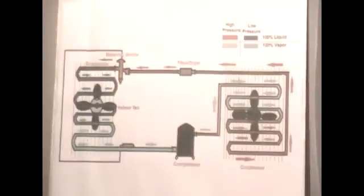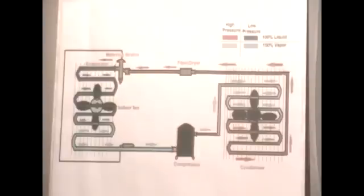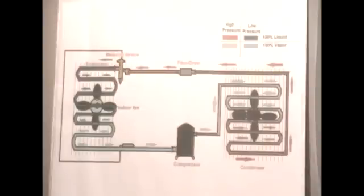On the screen you will see the major components that make up your air conditioning system and the state of your refrigerant as it goes through different sections of the system. This is your typical compressor, this is your condenser coil, you have the condenser fan motor, you have your filter dryer, you have your metering device — shown here as a TXV valve — and you have your evaporator coil or indoor coil, and your evaporator fan motor. Let's look at the job of each component and the state of your refrigerant at each section of the system.